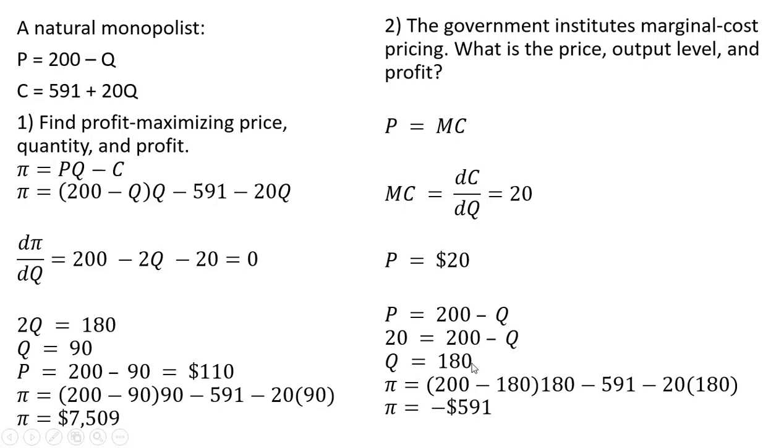To calculate the profit with marginal cost pricing, take Q equals 180 and plug it into the profit function. We see that the firm would be making an economic loss of negative $591. That's one of the problems with marginal cost pricing and why it would seldom be used, because in many cases the firm would be making an economic loss.